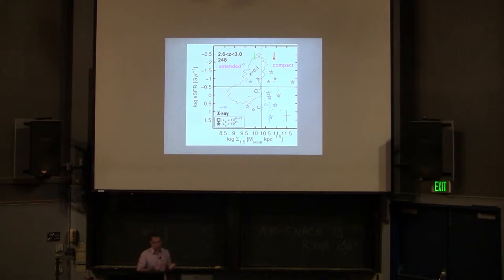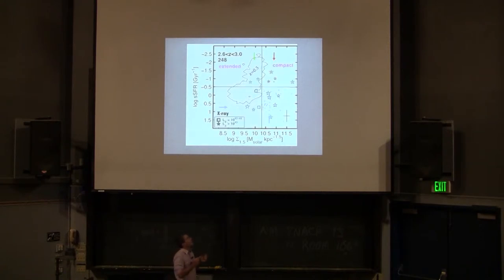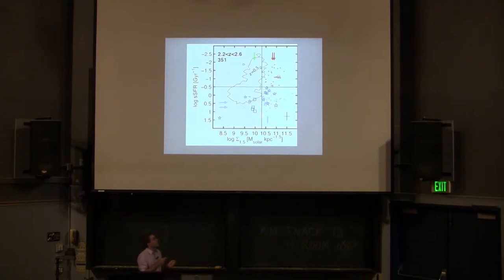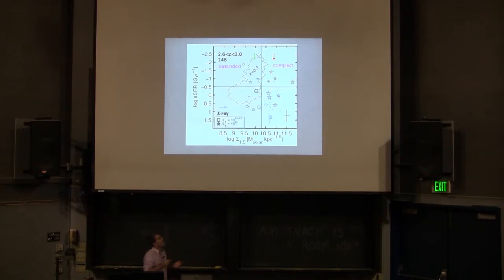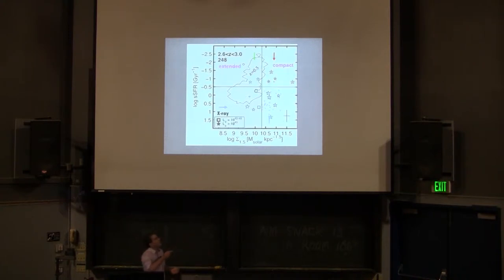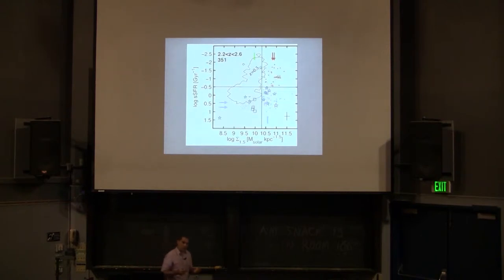Moving to lower redshift, the first thing you can see is a significant increase in the density of quiescent galaxies. Whereas the number density of compact star-forming galaxies also increases, we still see a lot of AGN activity, and it seems like this population is shifting up and making a lot of new compact quiescent galaxies — as if compact star-forming galaxies were just quenching and moving up in this sequence, forming the bulk of the new quiescent population.